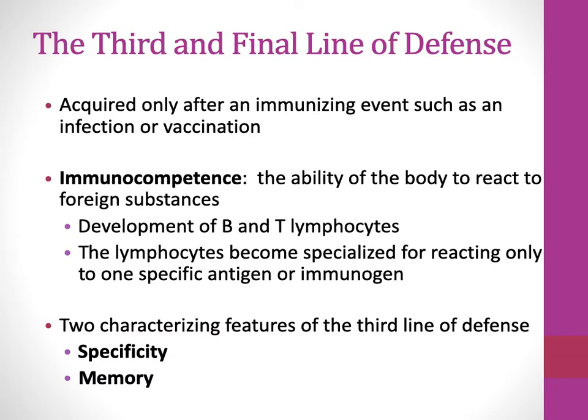The term antigen refers to something that the immune system can recognize. A lot of times those are proteins that get broken down into peptides, and specific pieces of those peptides are what the T cell or B cell recognizes using its receptor. Nucleic acids and certain carbohydrates and lipids can also act as antigens, but protein antigens have been studied the most because of the techniques we have.